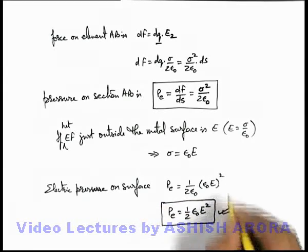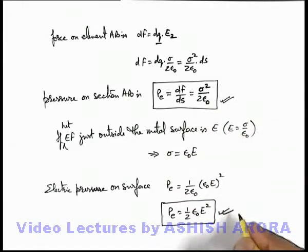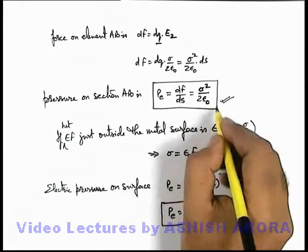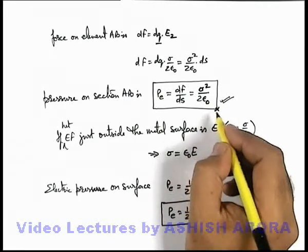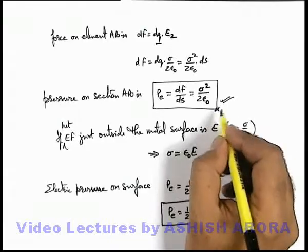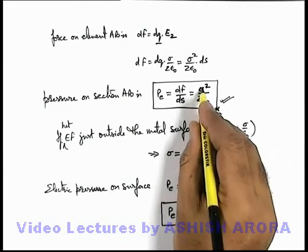You can use either of these results as both are quite useful. However, the first one — sigma-squared by 2 epsilon-naught — is more important because in the majority of cases we need to calculate electric pressure in terms of surface charge density.